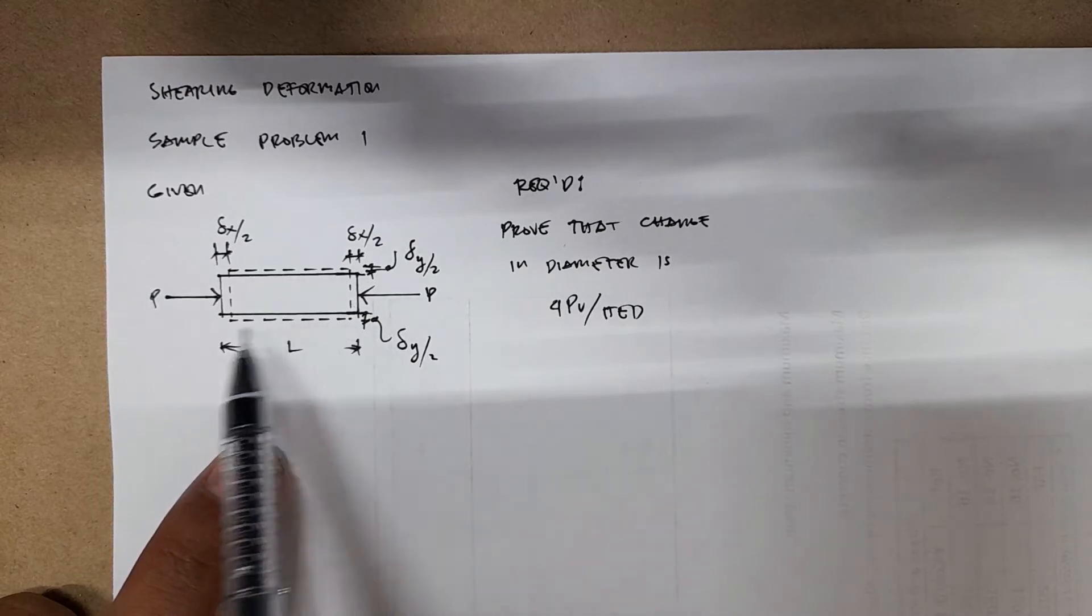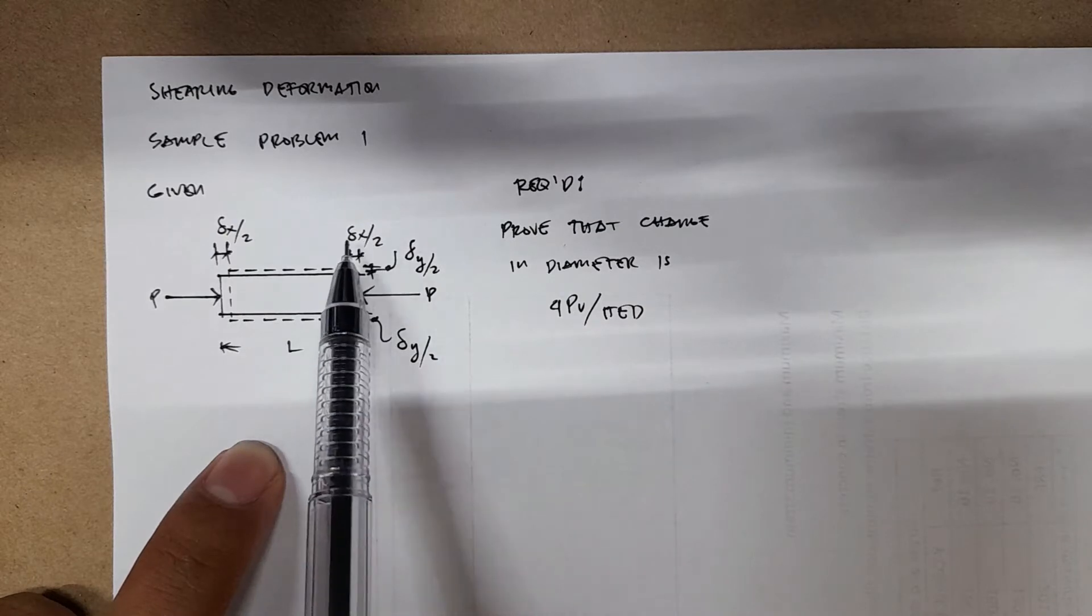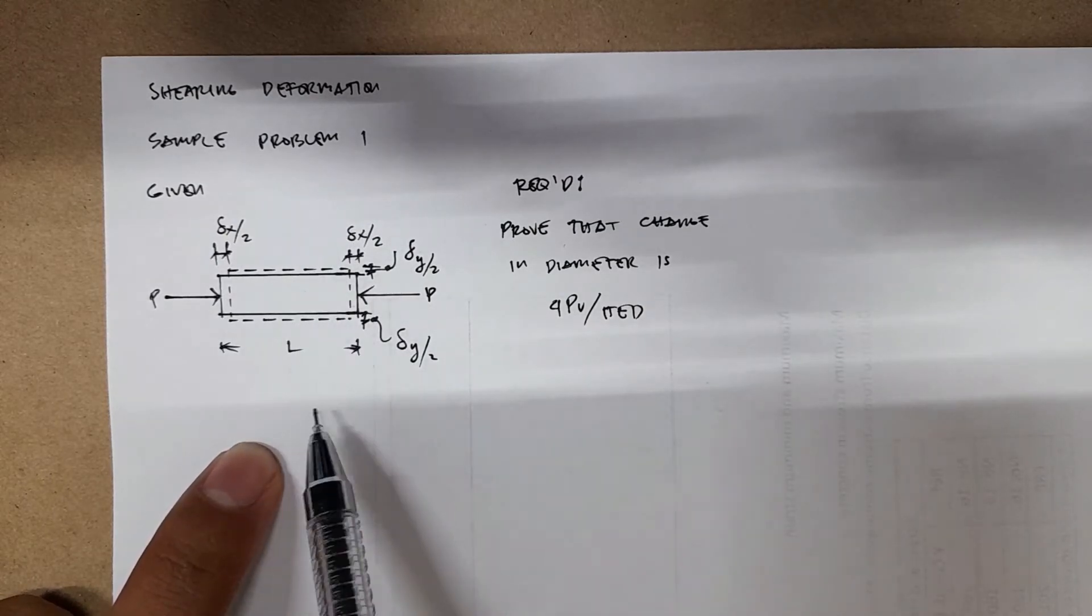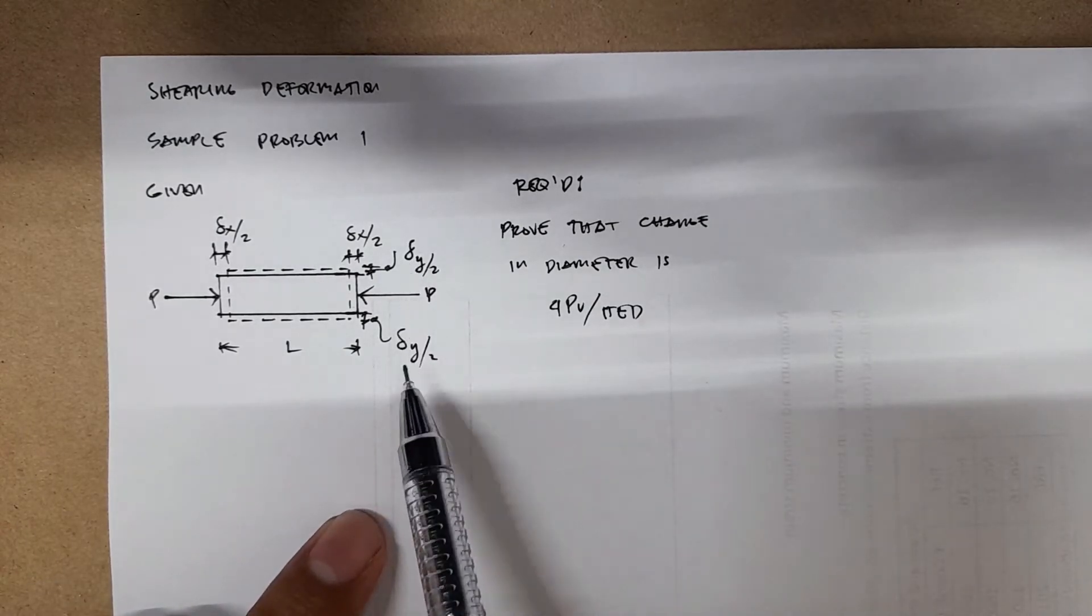So the L here, the change in L is the deformation in the x-direction, so that's why you have deformation x. And the change in diameter is your deformation in the y-axis or y-direction. That's why you have deformation y.